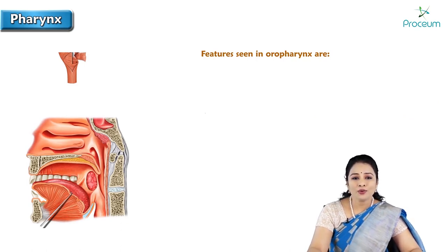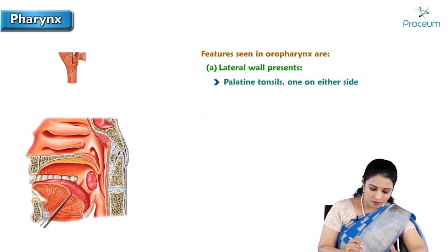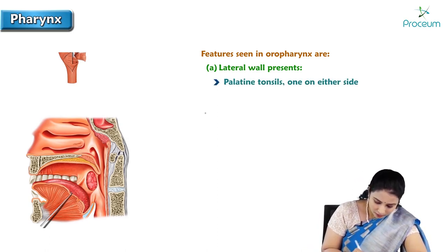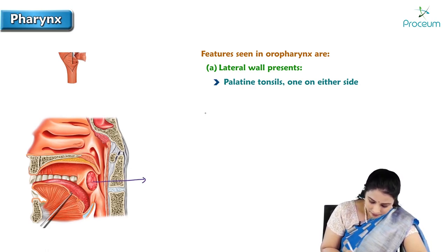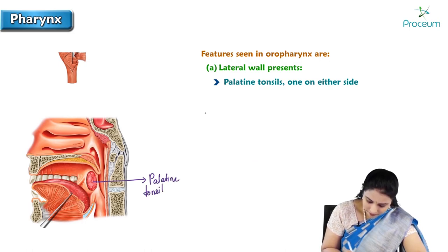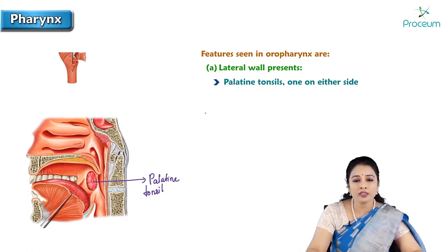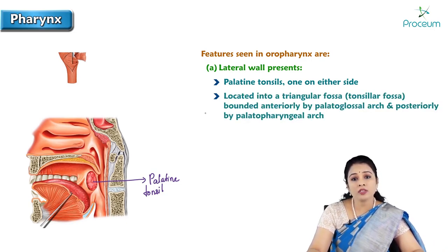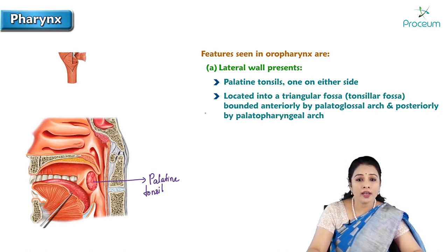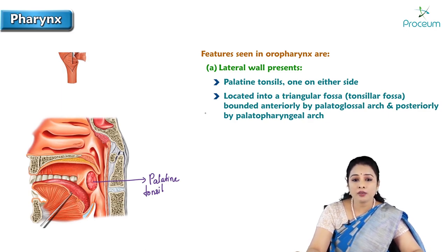Features seen in the oropharynx: the lateral wall presents the palatine tonsil. The oropharynx is below the soft palate and above the epiglottis. The palatine tonsil is present on either side of the oropharynx, located in a triangular fossa called the tonsillar fossa, which is bounded anteriorly by the palatoglossal arch and posteriorly by the palatopharyngeal arch.